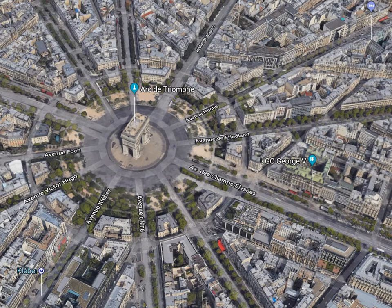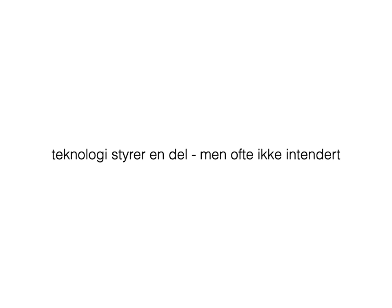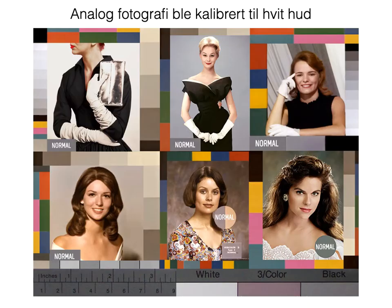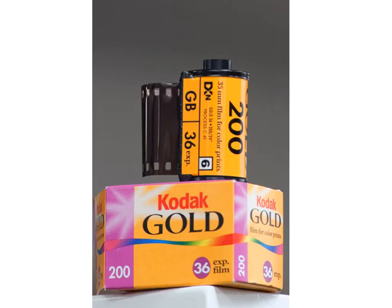Technology certainly can control society and the way we're able to behave, but it's often not intended. For instance, I cannot believe anyone designed staircases specifically to keep people in wheelchairs out, but it's an unfortunate consequence. Another example is analog photography, which was calibrated for white skin. This is a Shirley card, which photographers used to calibrate images — there's no one with dark skin on it. It was almost impossible to take good photos of people with dark skin until the 1970s, when Kodak came up with Kodak Gold, known for being good for dark images.